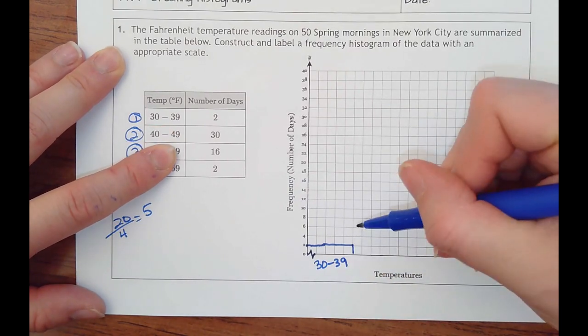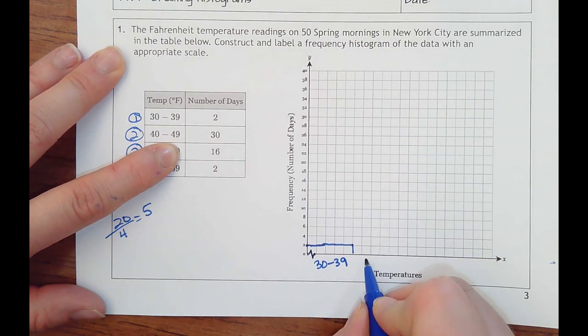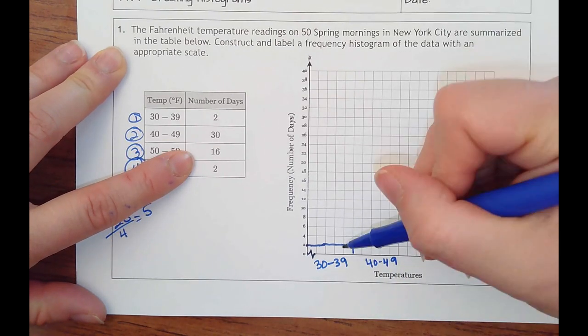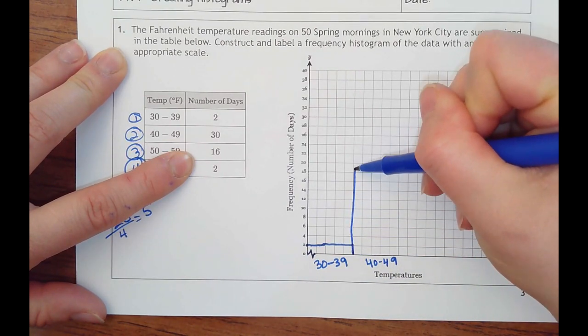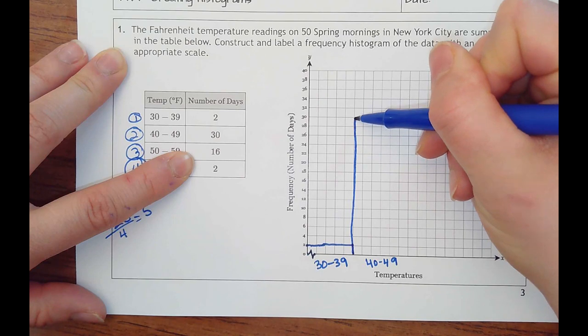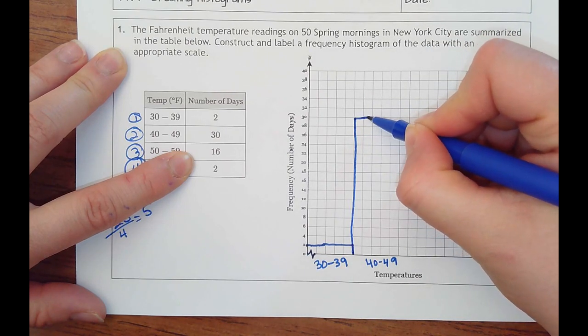The next one, 40 to 49 is the temperature that occurred 30 days. Big difference would be here. Go five boxes wide.